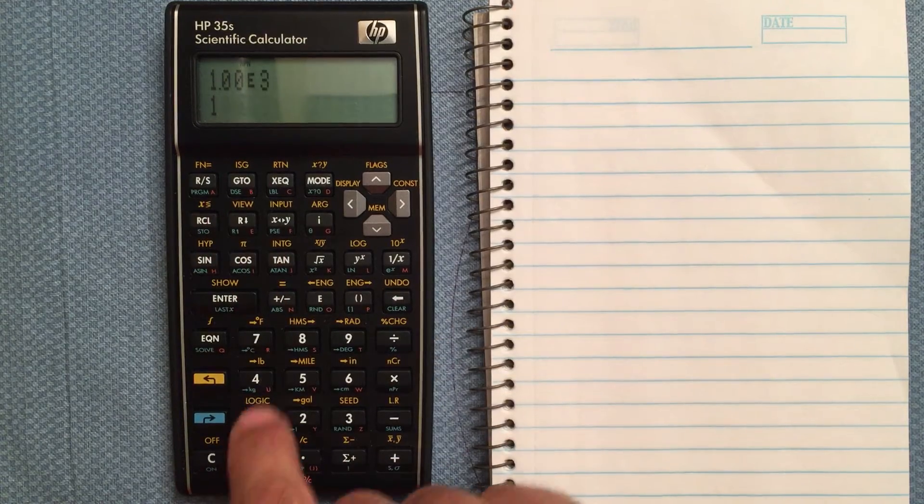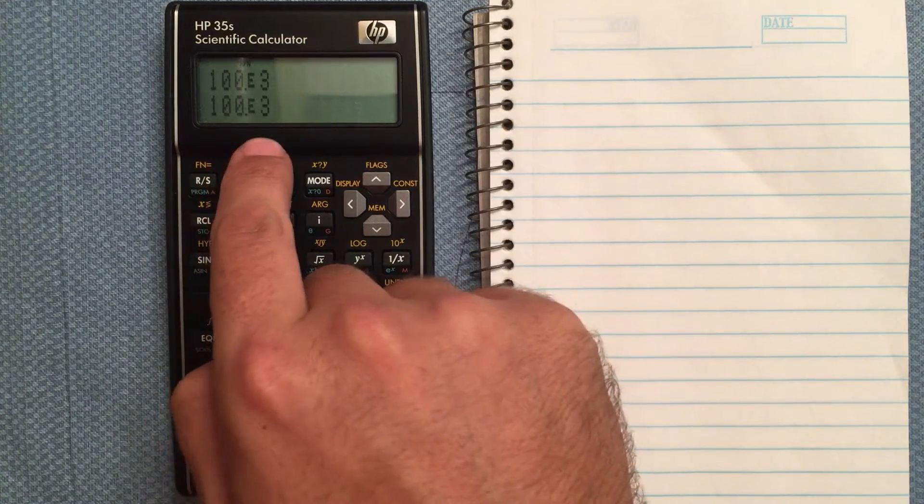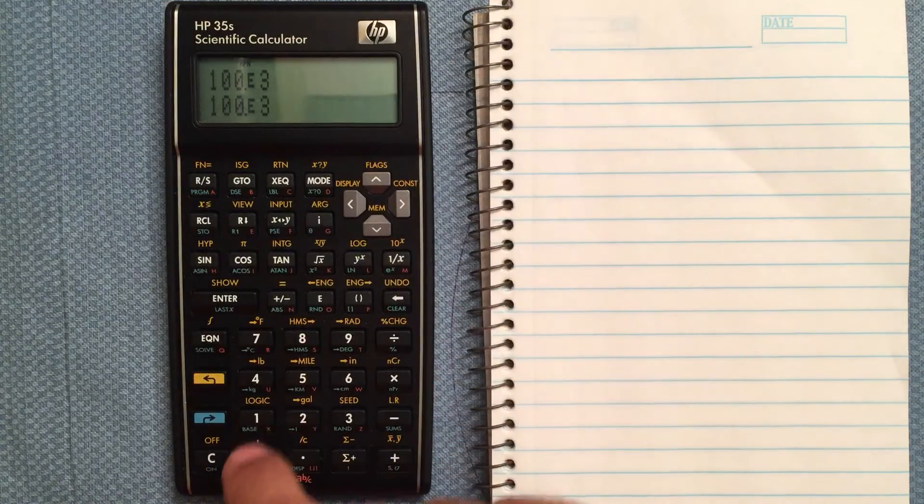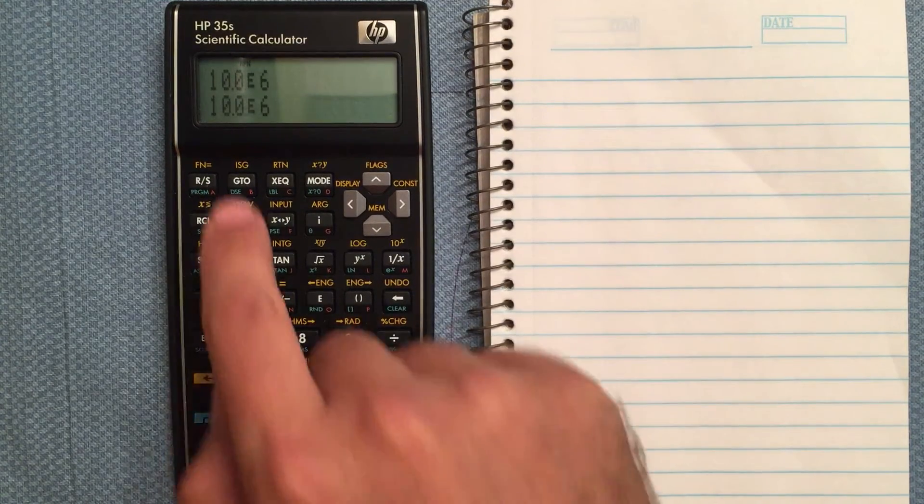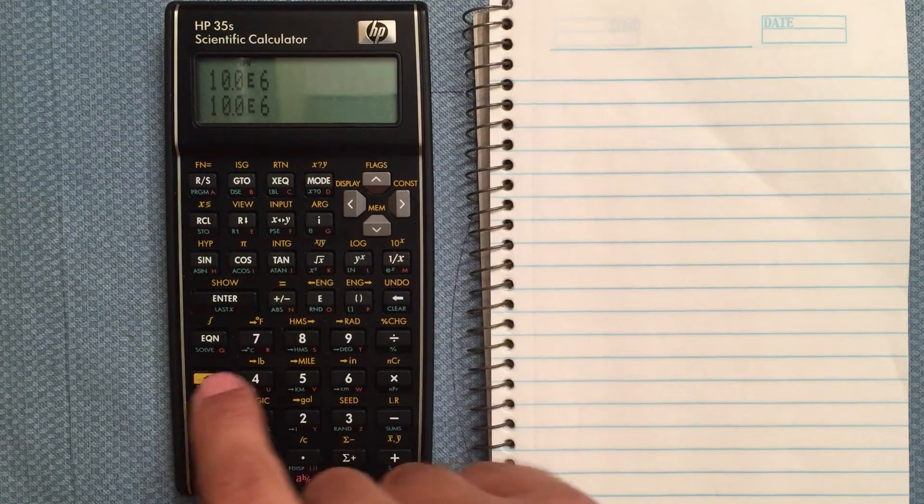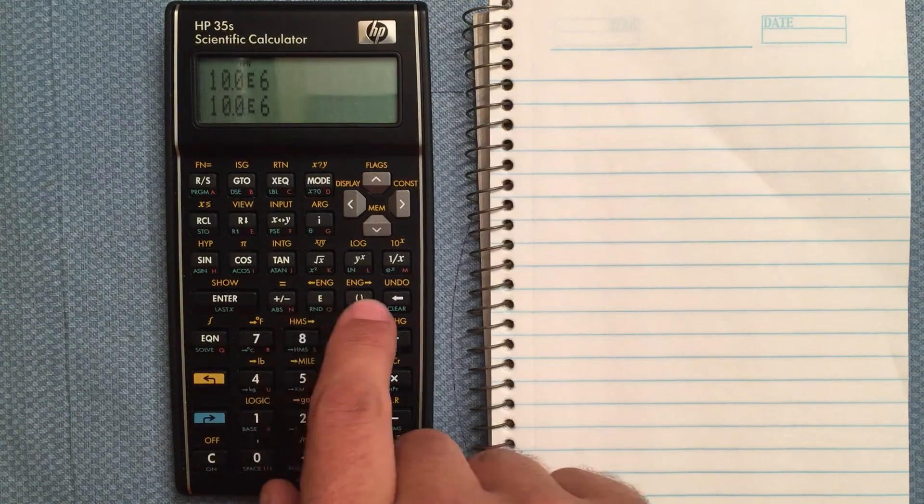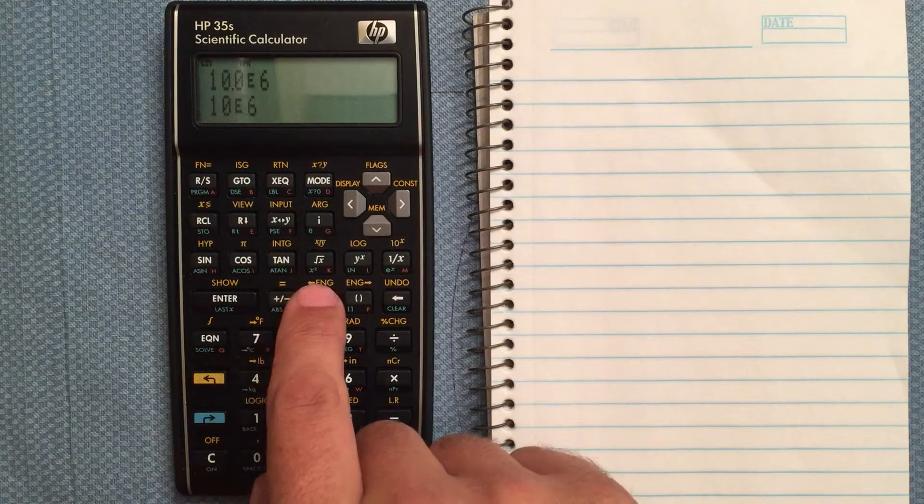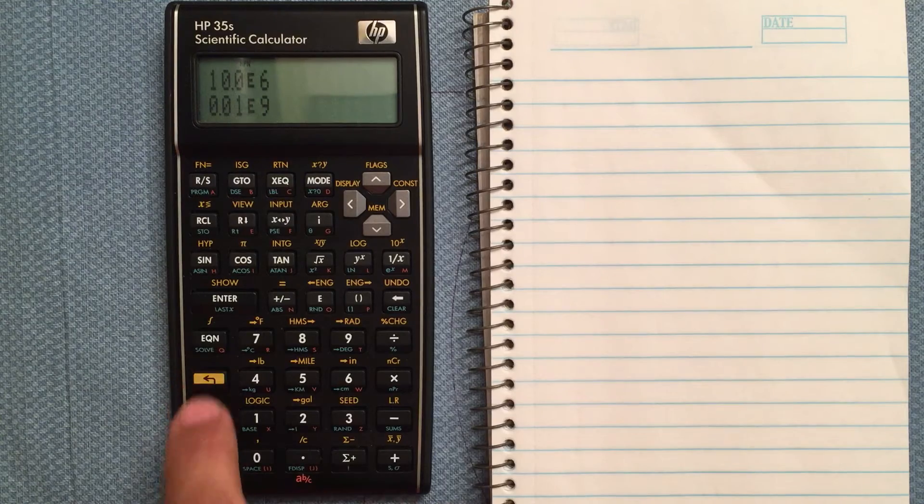If I do 1e5, it'll do 100 times 10 to the 3rd. So it'll always show multiples of 3. If I do 1e7, it'll go 10 times 10 to the 6th. Oh, one other thing. These engineering switches here, if you wanted to see what it looks like with another multiple.